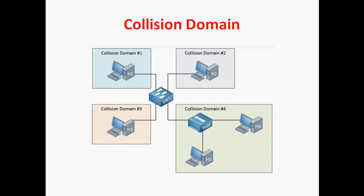After hub, we developed bridge. Once bridge was introduced, we can store the frame in a table. Before bridge, hub is a dumb device — nothing is stored. If one port receives an electrical signal, it passes it to all other ports. In bridge, we store the frame, and whenever required, it forwards that frame through the table.